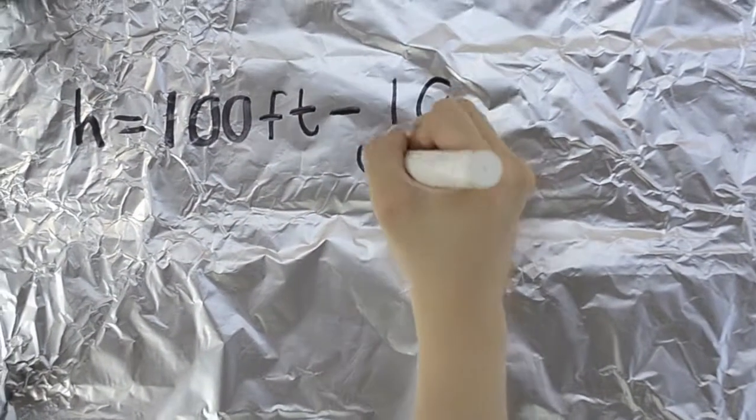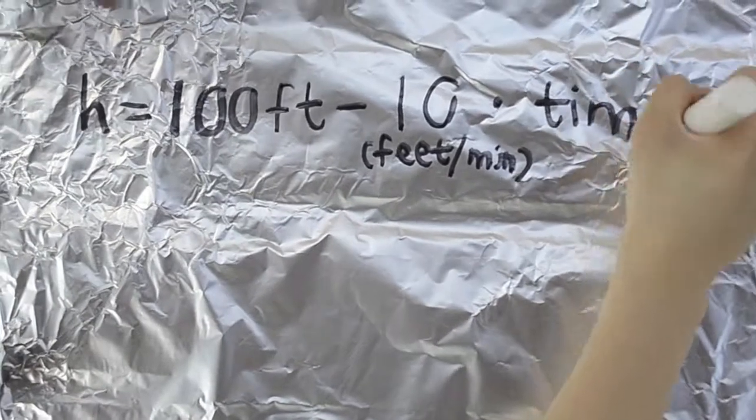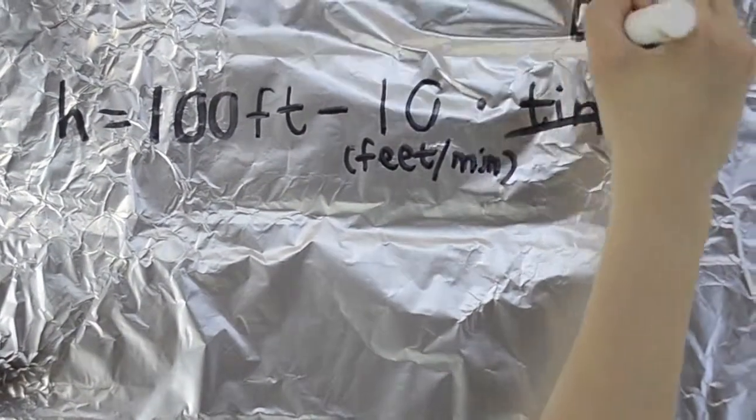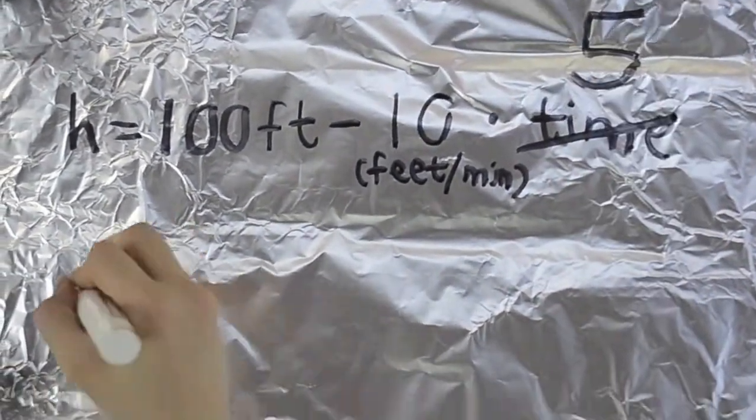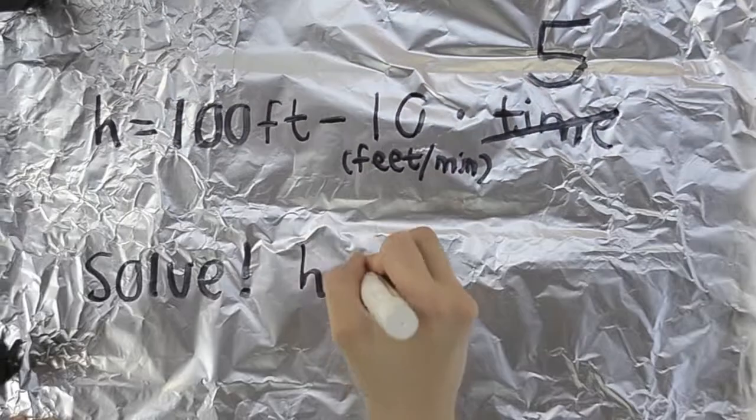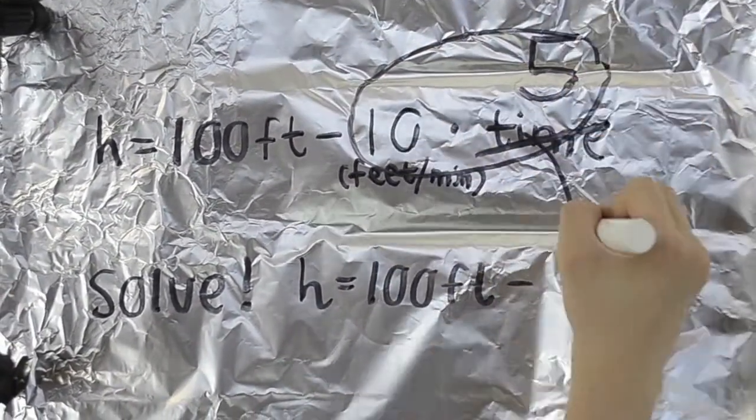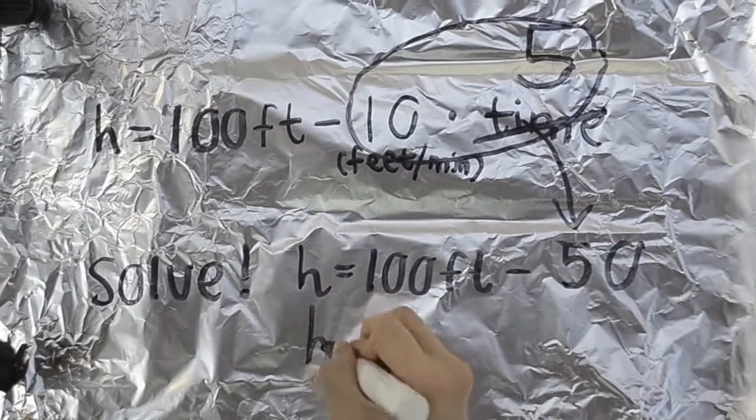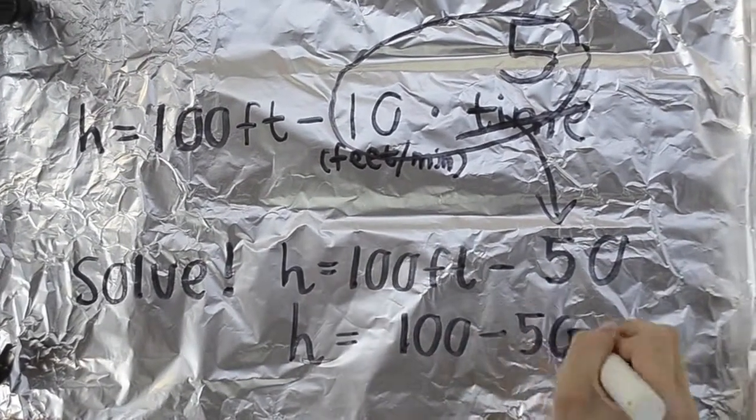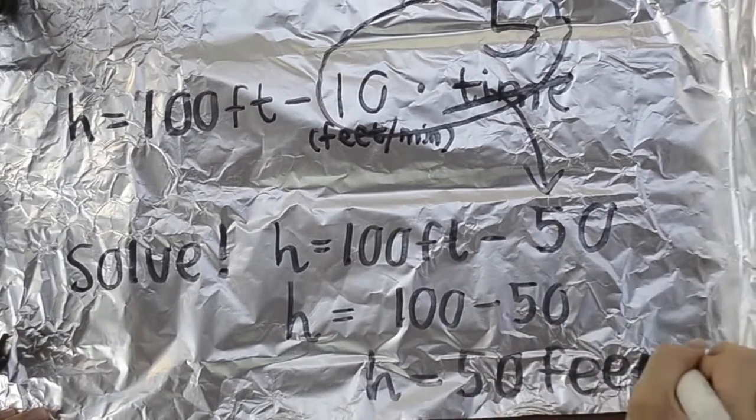So if you begin to solve this equation, since time is five minutes, let's begin to solve. So H equals 100 feet minus 10 times 5, which is 50. So H equals 100 minus 50, which is 50 feet.